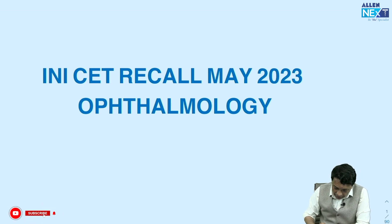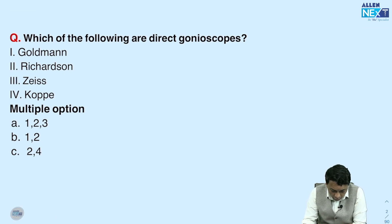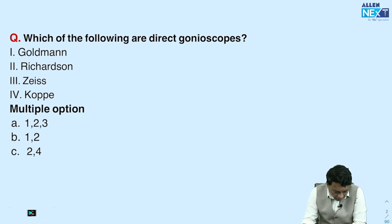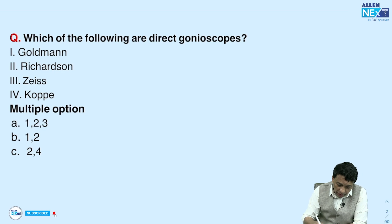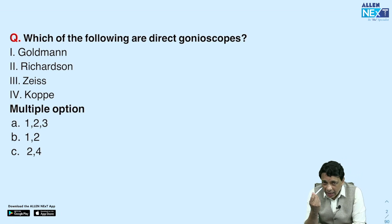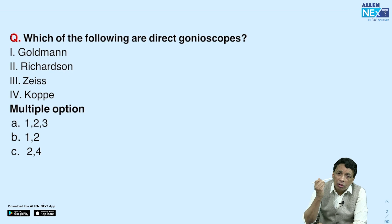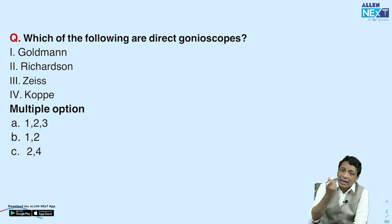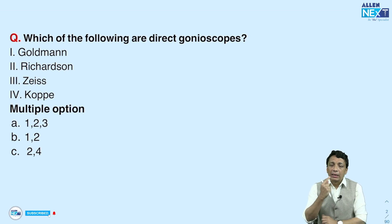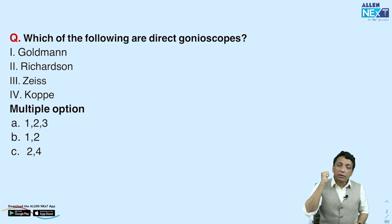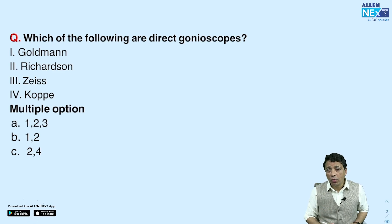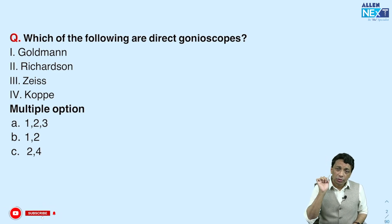The first question from 2023 May: which of the following is a direct gonioscope? Choices are: Goldman, Richardson, Zeiss, and Coppel. Gonioscopes are instruments designed to see the angle of the eye. We need a gonioscope because you cannot see the angle directly due to the critical angle — because of total internal reflection, light rays reflect back inside the eye. The critical angle must be more than 46 degrees for light to escape. That is why you require a gonioscope.